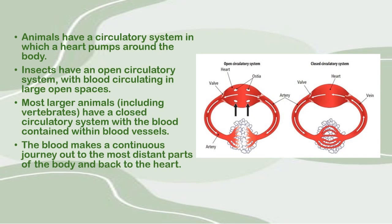Animals have a circulatory system in which a heart pumps blood around the body. Insects have an open circulatory system with blood circulating in large open spaces. Most larger animals, including vertebrates — animals with a backbone — have a closed circulatory system with blood contained within blood vessels. The blood makes a continuous journey out to the most distant parts of the body and back to the heart.